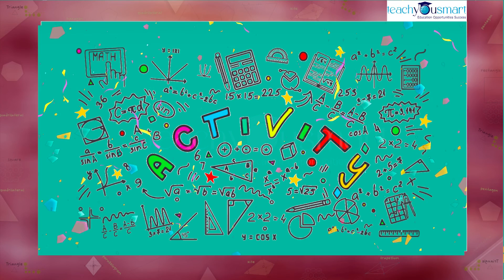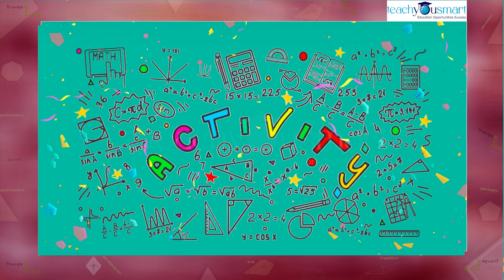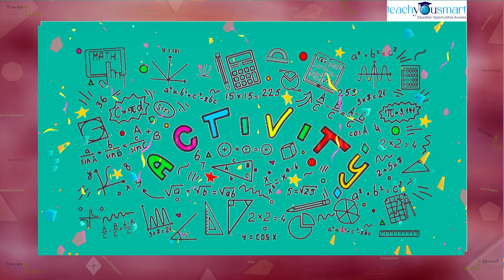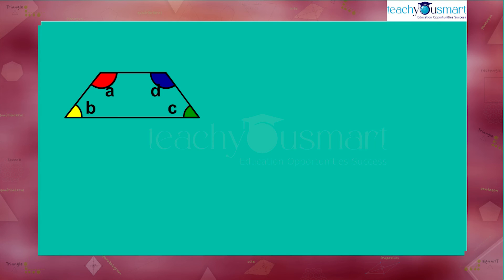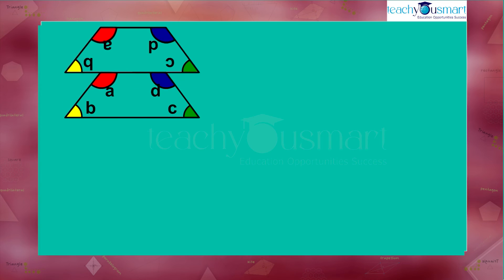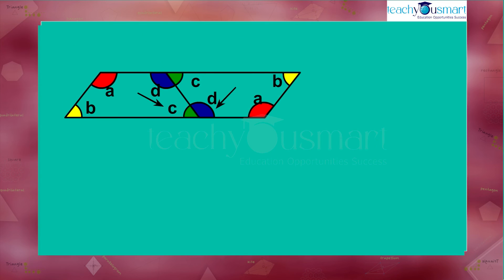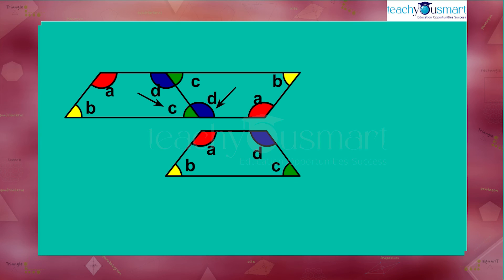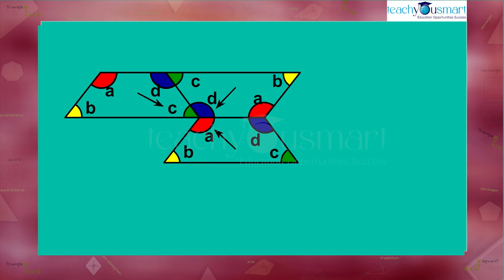Before winding up today's session, let's do an activity together. Take a paper and cut it into a quadrilateral and name the angles as A, B, C, D. Place the paper with angle C at the bottom right corner, then rotate it such that angle D comes next to angle C. Trace it, then rotate the paper again and place the angle A vertex next to angle D and trace it.